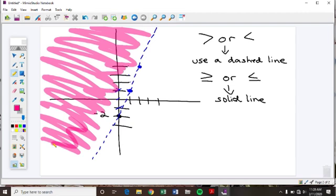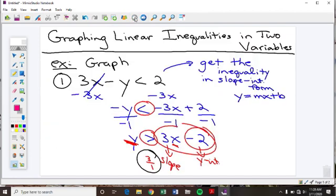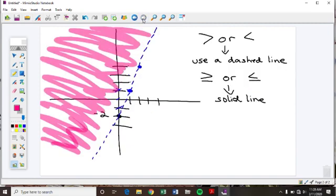So when we're graphing ones that have two variables like this, where we get it in slope-intercept form, we're going to shade a great big area when we get done. All right? Let's do another one.